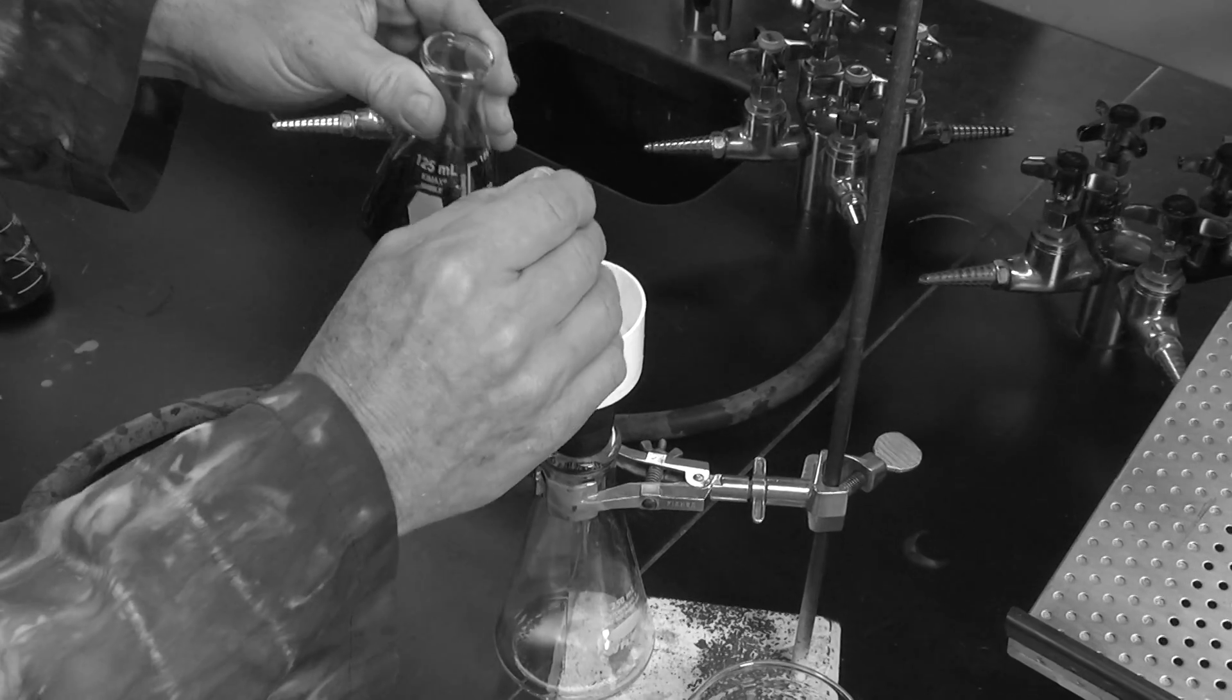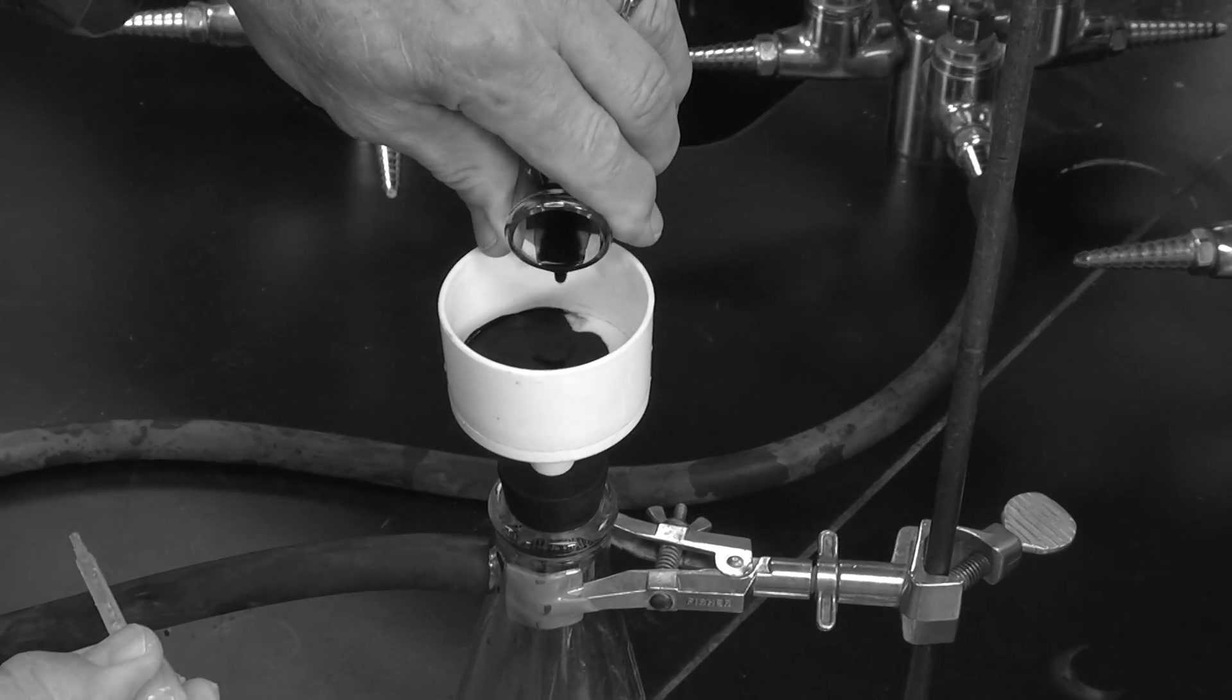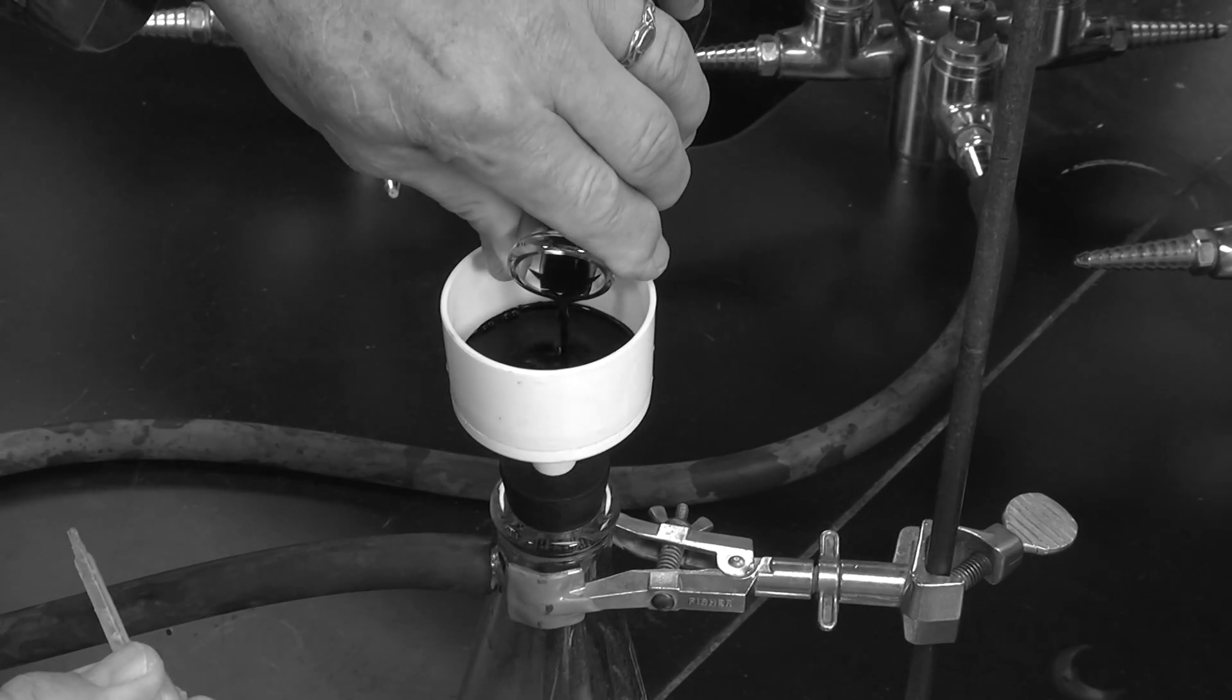The next step is to separate the solid indigo from the solution. This is done using vacuum filtration.